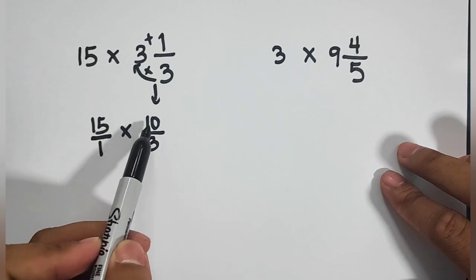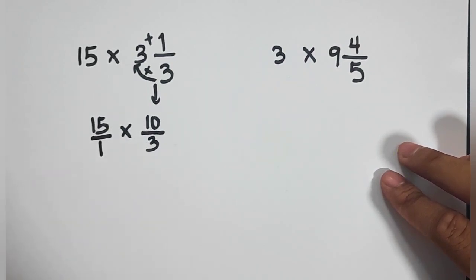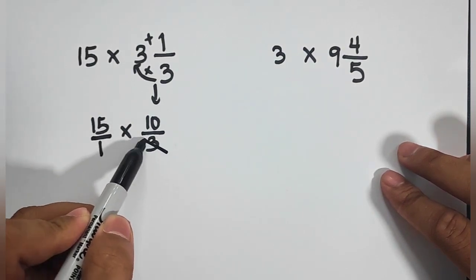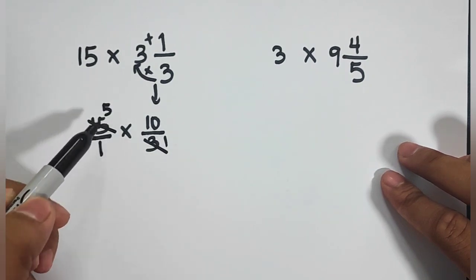So as you can see, we can directly multiply 15 by 10 and then 1 and 3. But we can use cancellation to lessen the number or to lessen the numbers. Here, we can eliminate 3 and it will become 1. As well as 15, it will become 5.